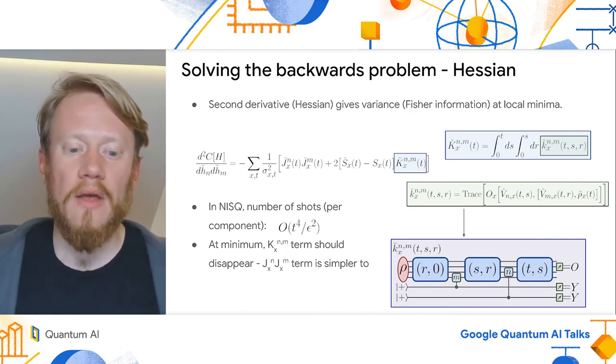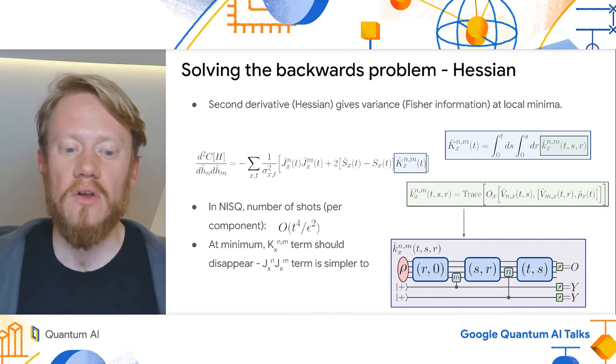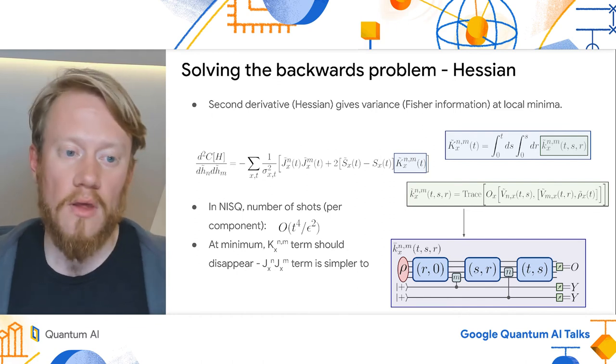So, if you wanted to estimate this on a device, you would only need to calculate these j-terms, which we would presumably already have if we are doing gradient descent. This is a nice little bonus here.